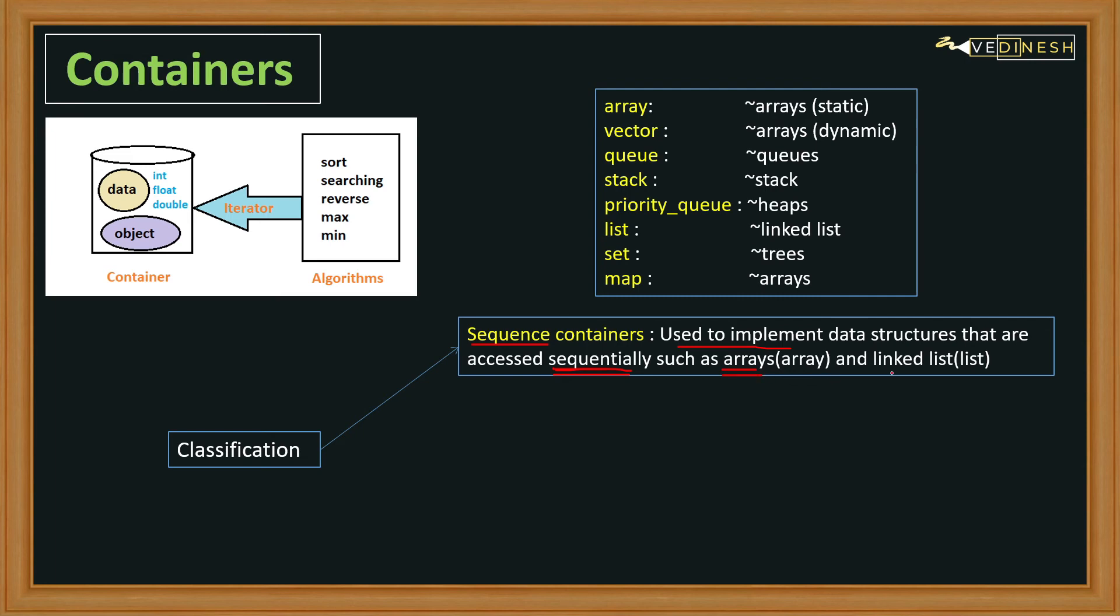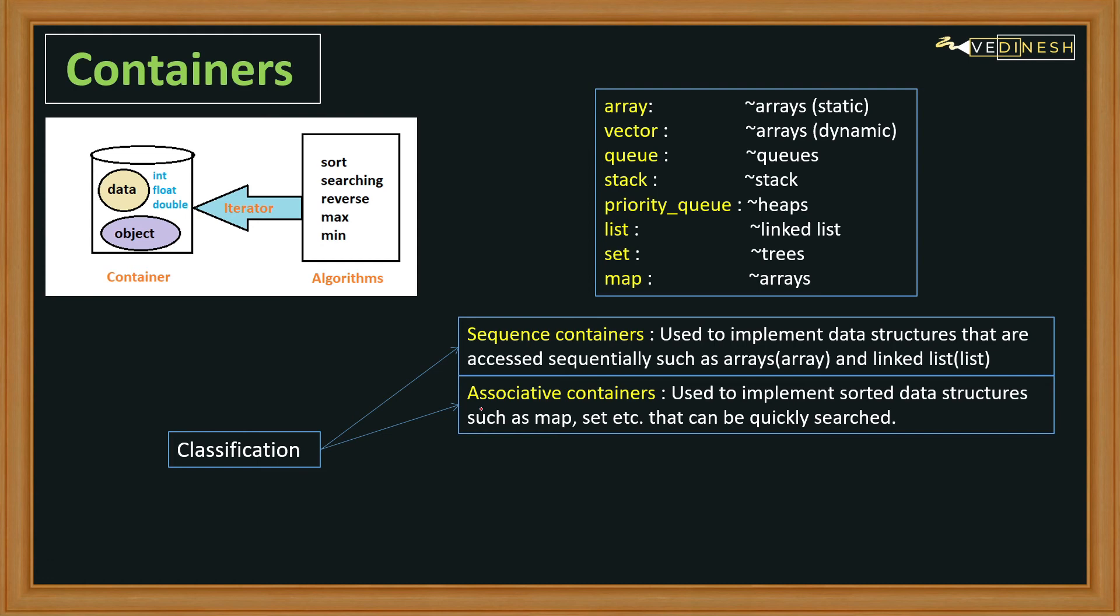Moving forward, we have associative containers. These are used to implement sorted data structures. Sorted means we can quickly search the data from it, and we have examples of such associative containers like maps and sets.